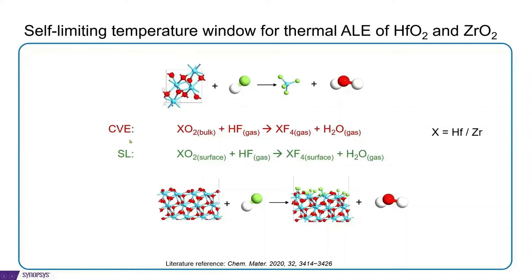In the etch reaction, we start with the bulk oxide and bring in hydrogen fluoride gas. This results in the formation of two gas-phase byproducts, a fluoride of the metal and a water molecule.